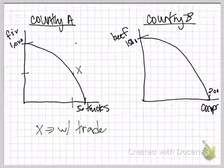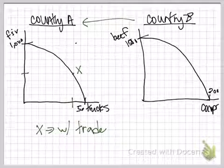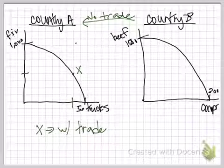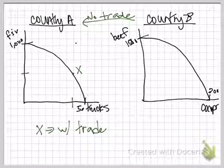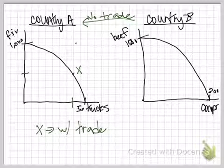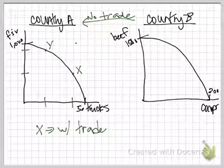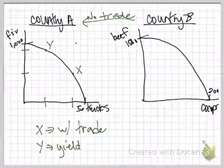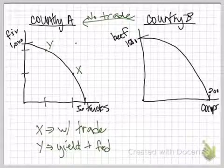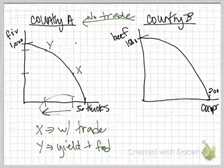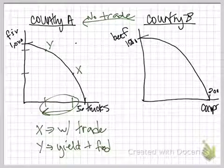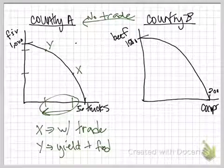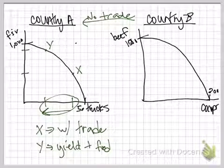But suppose country B decides no more trade. So they don't want to trade with country A. We're getting some kind of conflict with them. And so suddenly a lot of the beef that we're getting we're no longer going to get. If our people are hungry, we may have to make that decision. Instead of producing at point X, we may have to make the decision to come up and produce at point Y. Because point Y would give us more food. So we've got an increase here in our food supply. But what did we have to give up? Well, we had to give up all of the trucks, that those resources would have been used for. Because now we're going to have to use those to have more fruits and vegetables for our population to eat.